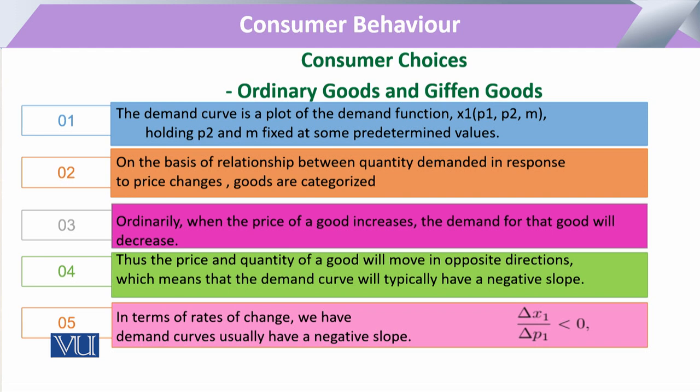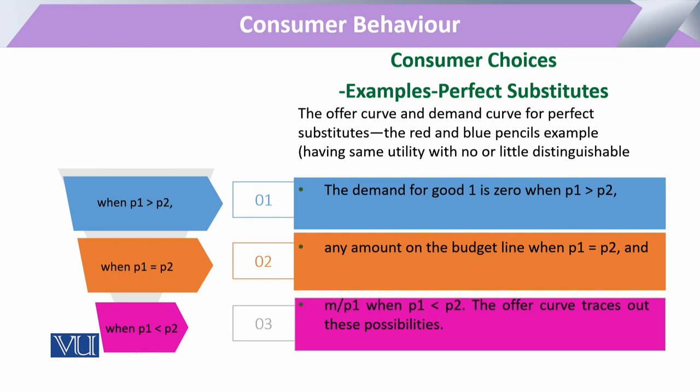We can have Giffen goods and ordinary goods. Likewise, there are commodities that are perfect substitutes to each other. When dealing with perfect substitutes, if the price of commodity 1 is greater than the price of commodity 2, the shape of the price consumption curve will be different.